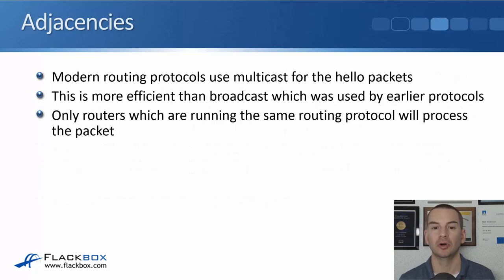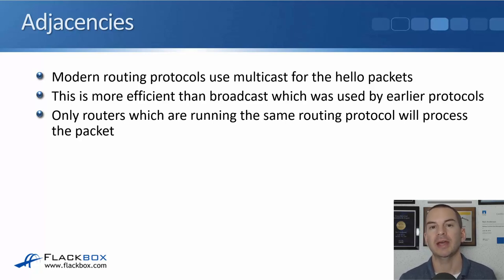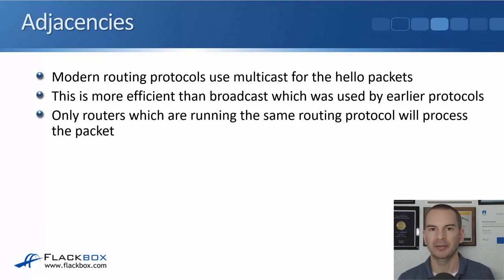Modern routing protocols use multicast for the hello packets. This is more efficient than broadcast that was used by earlier protocols like RIP version 1. With multicast, it's specific to the particular routing protocol, so a device is only going to process that packet if it's interested in forming an adjacency with that routing protocol — unlike broadcast traffic that has to be processed by all hosts. So it's more efficient.